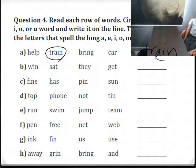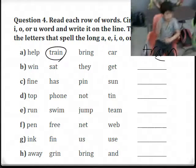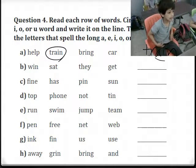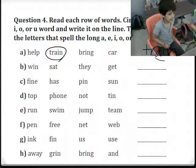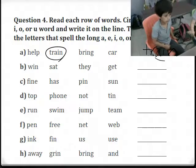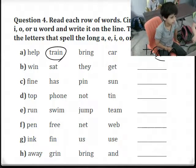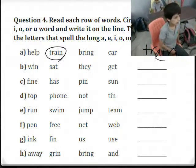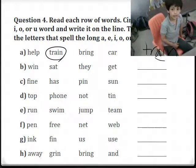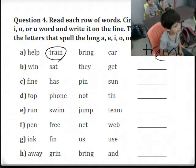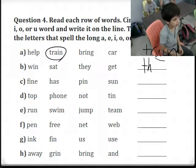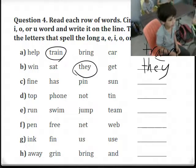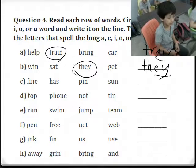Next one. The words are: when, sad, they, get. Which word has a long sound? 'They.' Excellent — it's 'they.' Which letters do we underline? EY — very good.